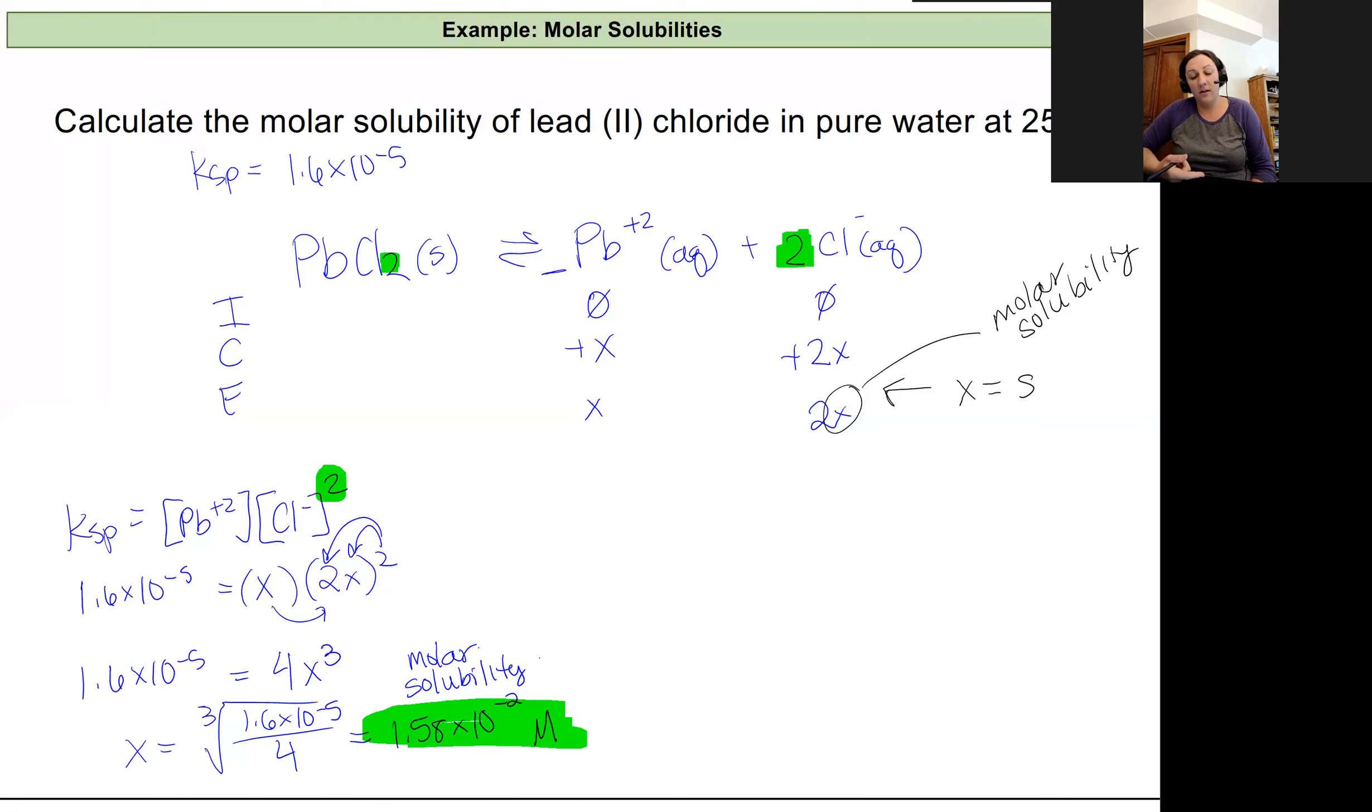So that's an ICE table followed by solving an algebraic expression. Now I'd shown you earlier that we have a generic formula for this, and it's really going to be this piece right here. So if we pull out our actual variables there, that Ksp, that x, or that molar solubility, was equal to the cube root of Ksp divided by 4. And this 4 is equal to...